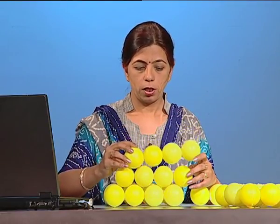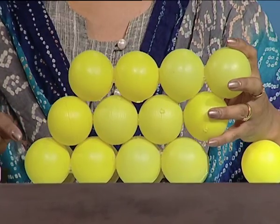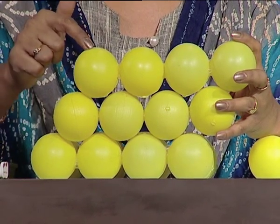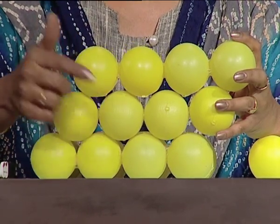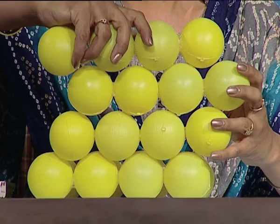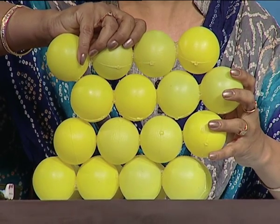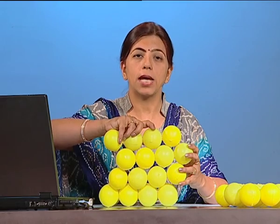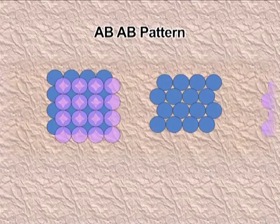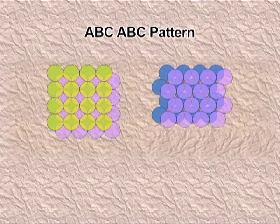The third option gives ABCABC type packing. Layer A is the base, layer B is placed in the grooves of layer A, and layer C is placed in the grooves of layer B. Then the fourth layer repeats layer A. So the three options for three-dimensional packing are: AAA type, ABAB type, and ABCABC type.